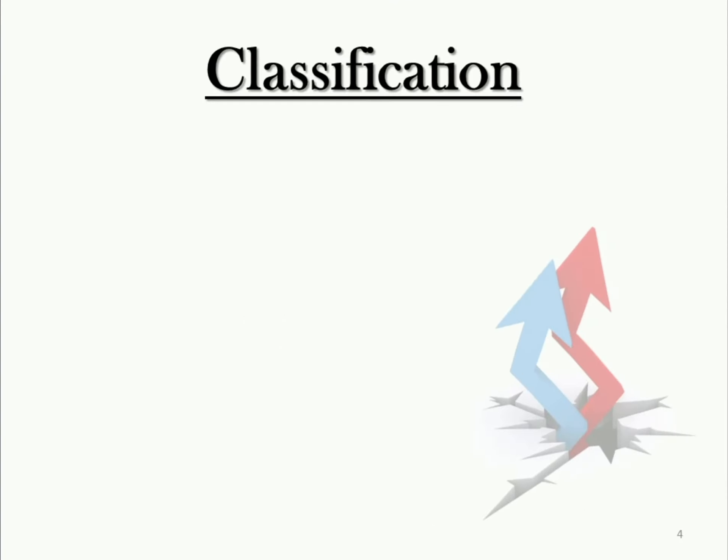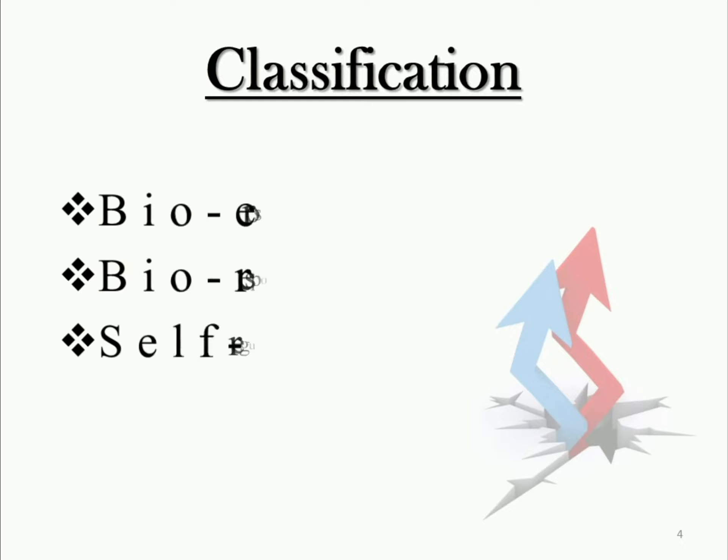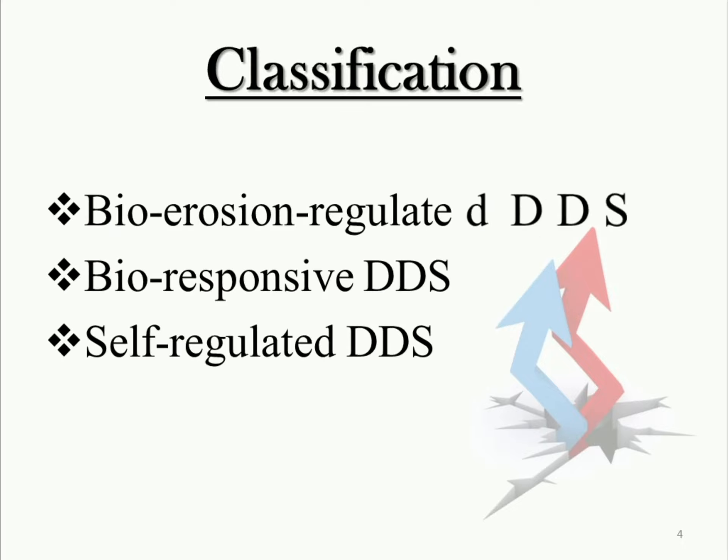Next, come to the classification. The classification consists of three types: bioerosion regulated drug delivery system, bioresponsive drug delivery system, and self-regulated drug delivery system.